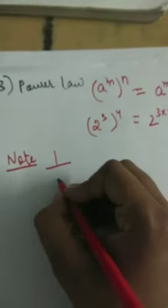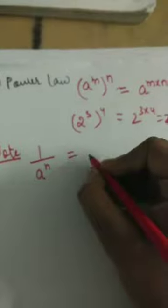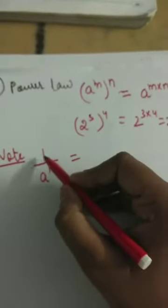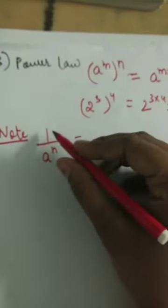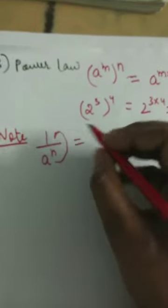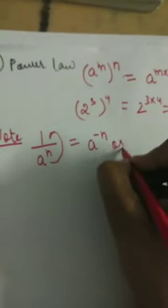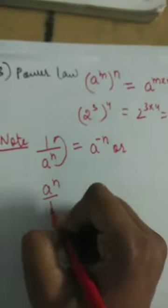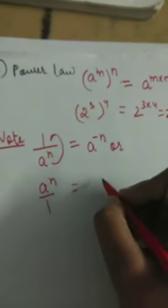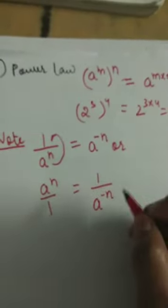Some important things to note: if a number a power n is written as 1 upon a power n (in the denominator) and we need to shift it to the numerator, the power becomes negative. Similarly, if a number is in the numerator and we shift it to the denominator, the power will also become negative.